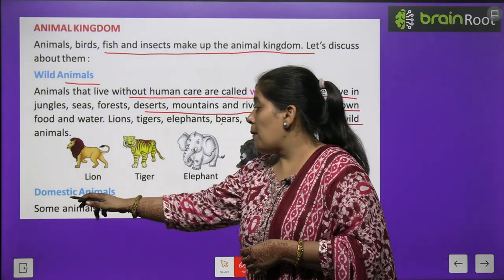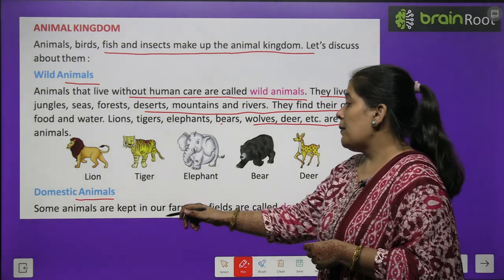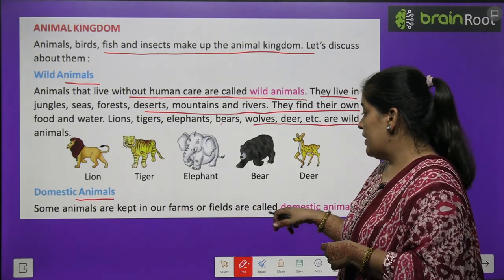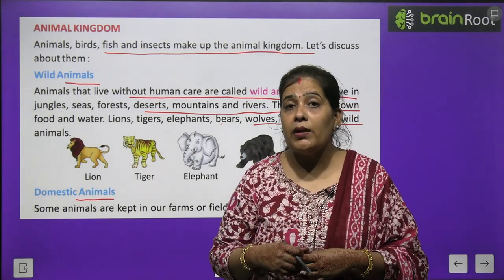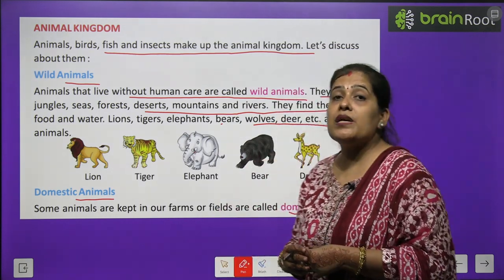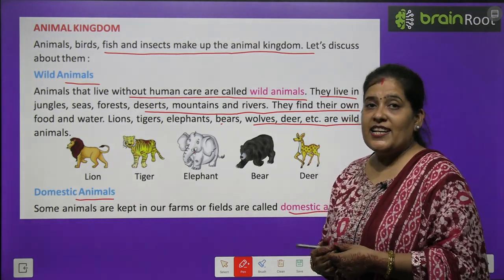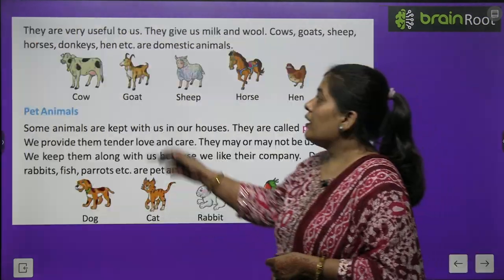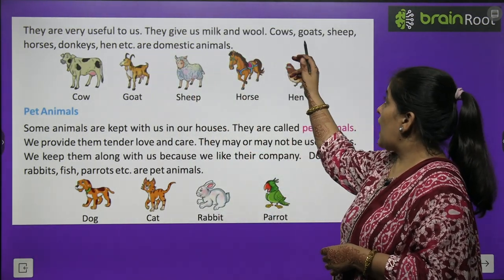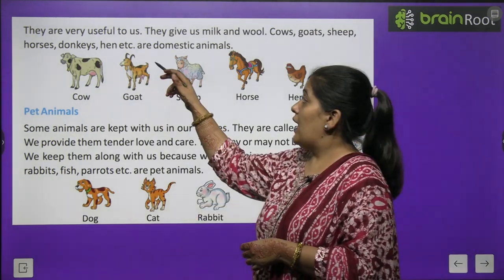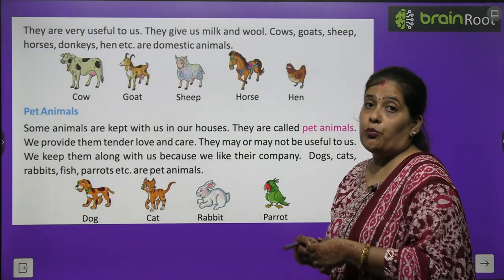Now we will learn about domestic animals. Domestic animals are kept in our farms or fields. They are called domestic animals. They are very useful to us. They give us milk and wool. Cow, goat, sheep, horse, donkey etc. are domestic animals.